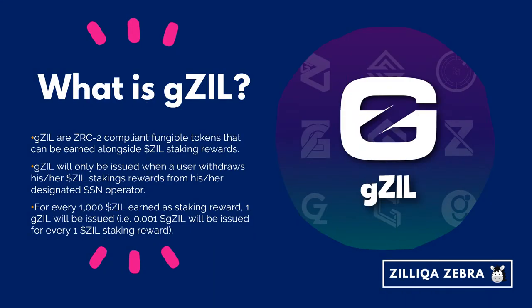GZIL are ZRC2 compliant fungible tokens that can be earned alongside ZIL staking rewards. GZIL will only be issued when a user withdraws his or her staking rewards from the designated SSN operator. For every 1,000 ZIL earned as a staking reward, one GZIL will be issued. The rationale behind issuing GZIL is to capture long-term token holders and to give them access to governance tokens that they can later use to make ecosystem-wide decisions.